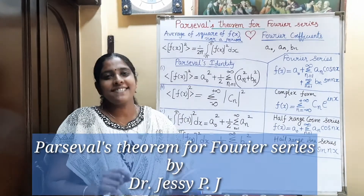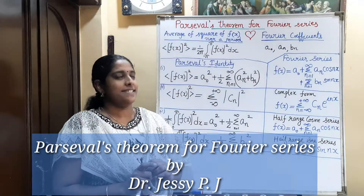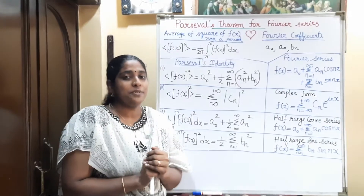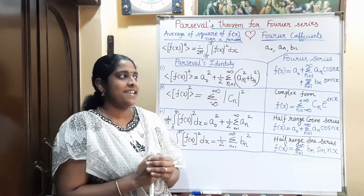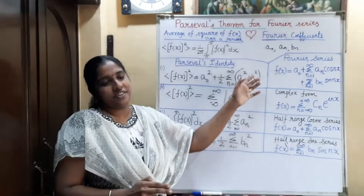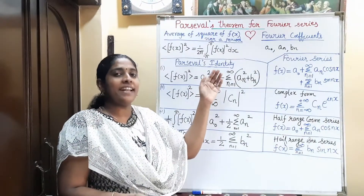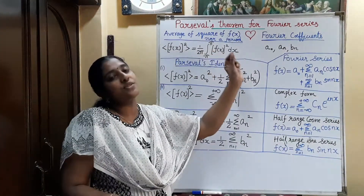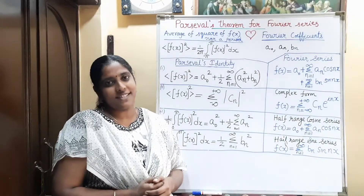Hi everyone, today we can discuss about Parseval's theorem for the Fourier series. This theorem gives a beautiful relation between the function and its Fourier coefficients — that is, the average of the square of the function for which we are writing the Fourier series, and how it relates to the Fourier coefficients.